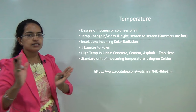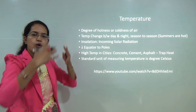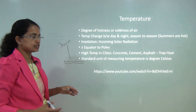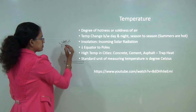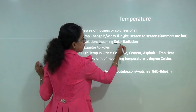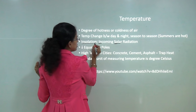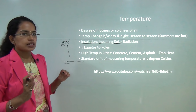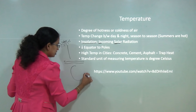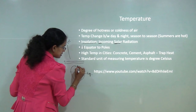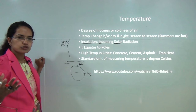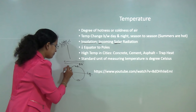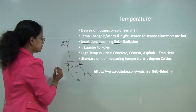The rays falling from the sun onto the earth are known as incoming solar radiation. Since they are coming from the sun, they are solar — incoming solar radiation can be abbreviated as insolation. Temperature decreases as we move from the equator to the poles. As we move towards the poles, you might have heard of igloos and penguins located in the Arctic and Antarctic — that is because there is a fall in temperature as you move from equator to poles.